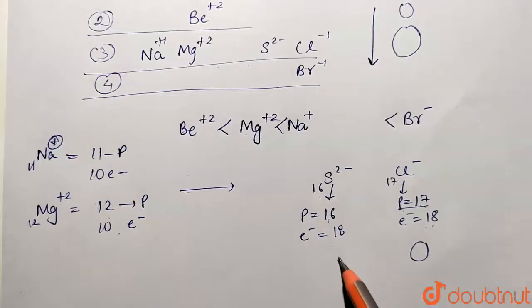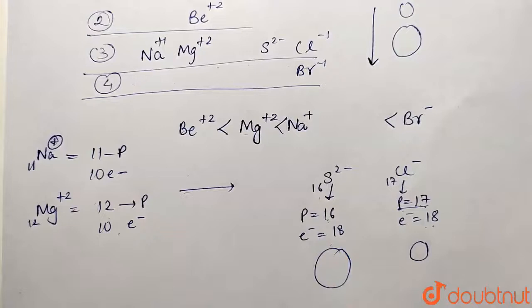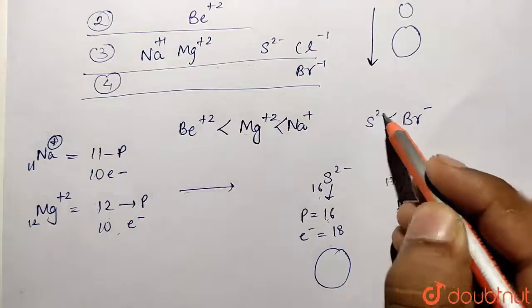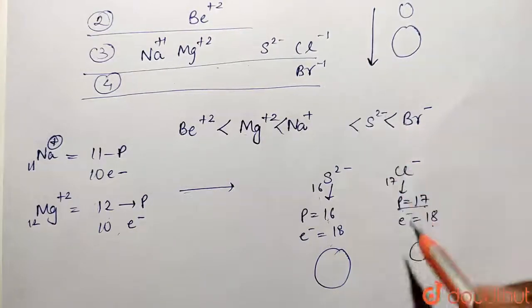Why? Because proton number is going to be less, so obviously this is going to be bigger. So sulfide is having more radii than corresponding chloride. So this was the whole order which is the correct solution for the problem.